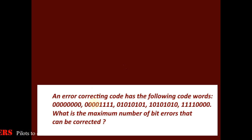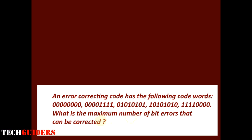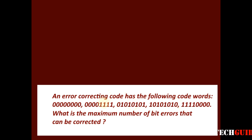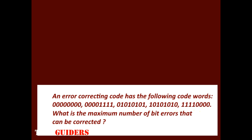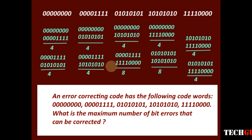Consider another question: an error-correcting code has the following codewords. What is the maximum number of bit errors that can be corrected? The maximum number of bit errors that can be corrected depends upon the minimum Hamming distance of the code. To find the minimum Hamming distance, we find the Hamming distance between each and every pair of these codewords. There are 5 codewords. The minimum Hamming distance is found to be 4.